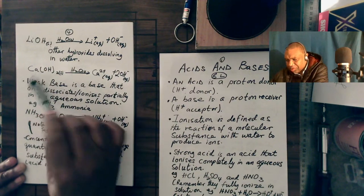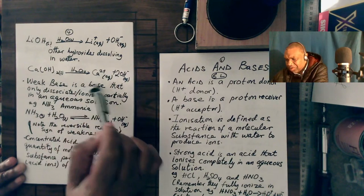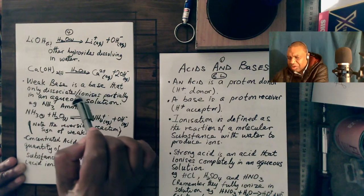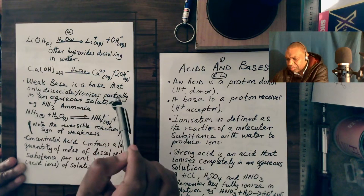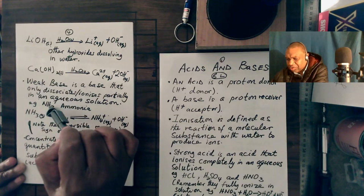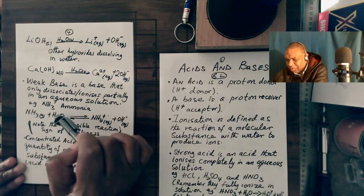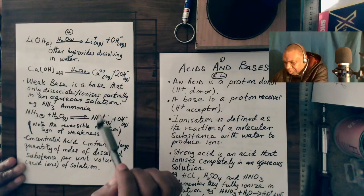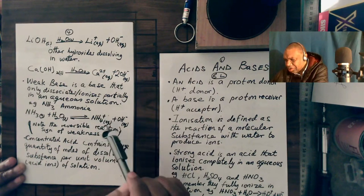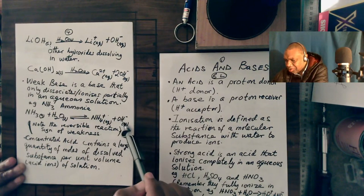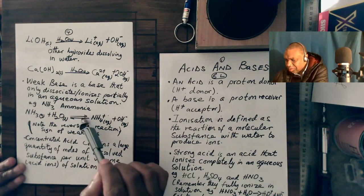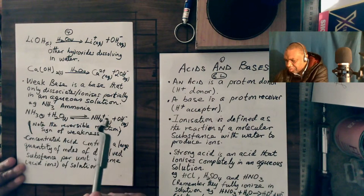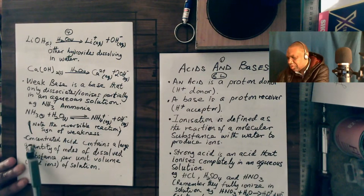Definition of a weak base: a weak base is a base that only dissociates or ionizes partially in an aqueous solution. An example is ammonia, NH₃. NH₃ gas plus water dissociates to give NH₄⁺ aqueous and OH⁻ aqueous. Note the reversible arrows, because ammonia is a weak base.